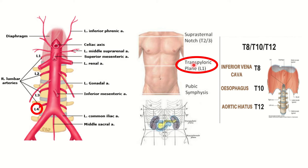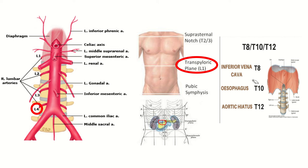Here we can see the transpyloric plane, which passes through the level of the pylorus of the stomach. It cuts the costal margin at the tip of the 9th costal cartilage at the mid-clavicular line. The transpyloric plane is located at the level of the lumbar 1 vertebra.